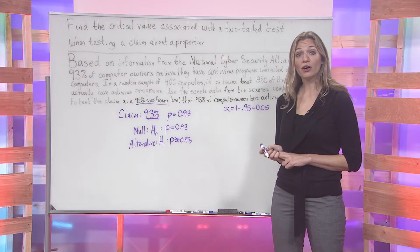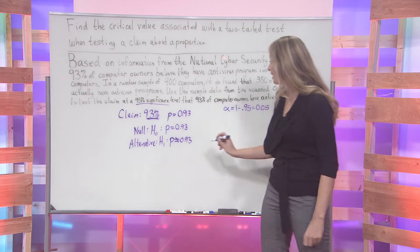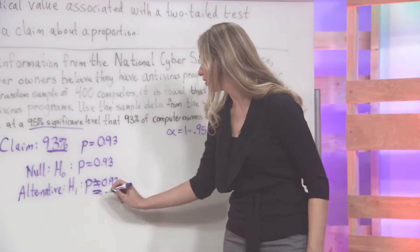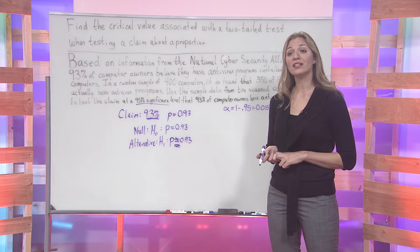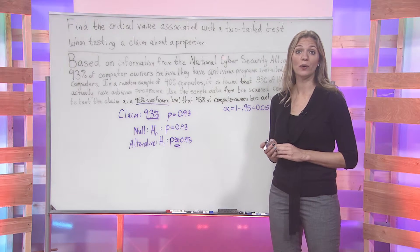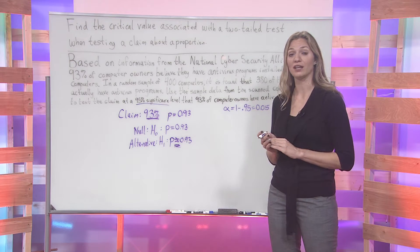Now, since our claim about the alternative is not equal to 0.93, this indicates for us that we want to do a two-tailed test.